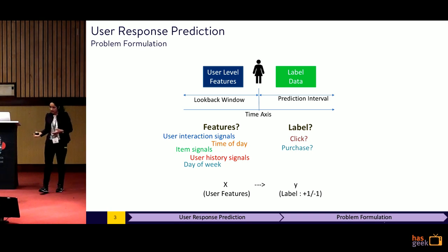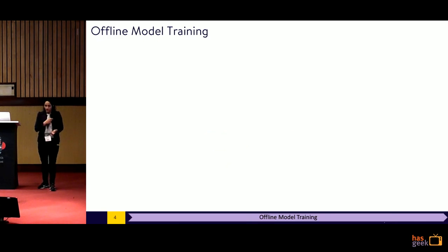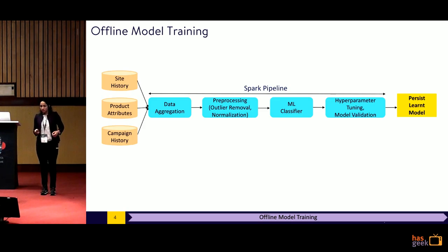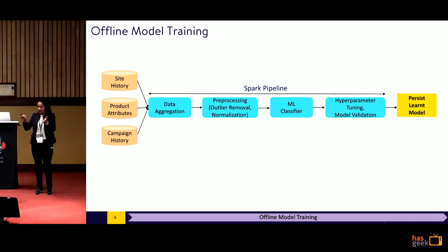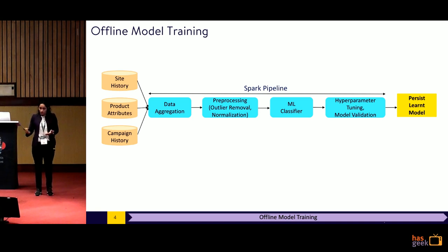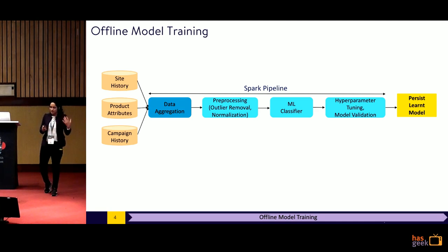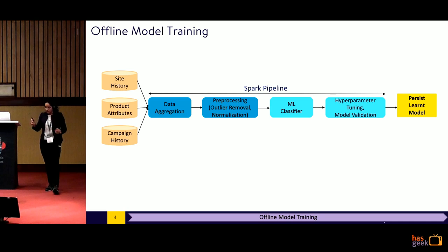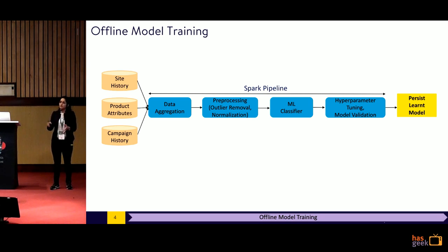So now that I have a dataset, the next problem is to train models on it. This is how the pipeline looks at Walmart right now — it is a pretty standard pipeline. We have lots of inputs coming into a Spark pipeline: site history of the users, attributes of the products the user has been browsing, and also the campaign history. This goes into a Spark pipeline which first aggregates the data, does some preprocessing, and adds an ML classifier on top of it. This ML classifier could be XGBoost, Random Forest, Logistic Regression, etc. Finally, there is a hyperparameter tuning layer which ensures we learn the best model from this data.